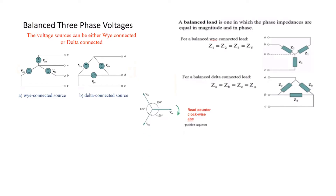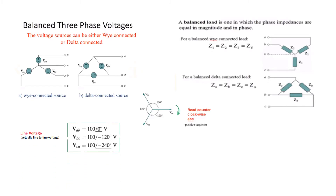Another term used in this book is positive sequence, which means we move clockwise. If we know VA and want to find VB, the angle of VB will be minus 120 degrees different. For example, if VAB is 100 volts at angle 0, then VBC will have the same magnitude but angle minus 120, and VCA will be 100 volts at minus 240 degrees.